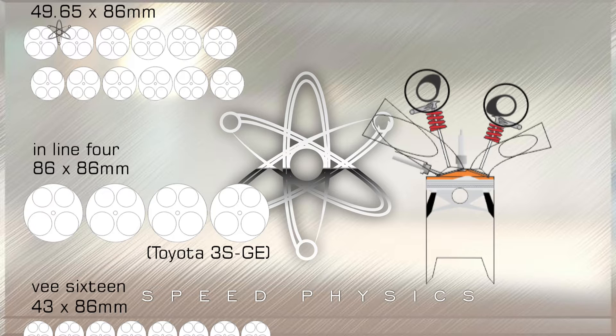Let's start off with a square bore and stroke engine which is Toyota's 3SGE as an example. It has a bore and stroke that is 86mm for four cylinders giving a total cubic capacity of 1,998cc. With that 86mm stroke the piston speed at 8000 rpm is 22.9 meters per second.